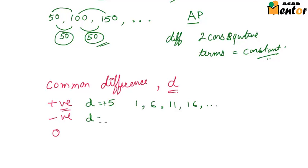If the common difference d is negative, for example, say negative 3, then the terms of the AP go on decreasing. Let us assume that the first term of this AP is 8, then the next term would be 8 minus 3, that would be 5, then 5 minus 3 or 2, then 2 minus 3 or minus 1, and then minus 1 minus 3, minus 4 and so on.